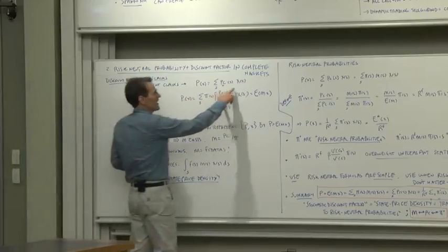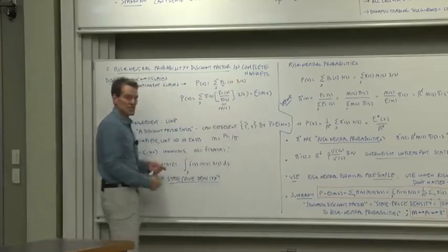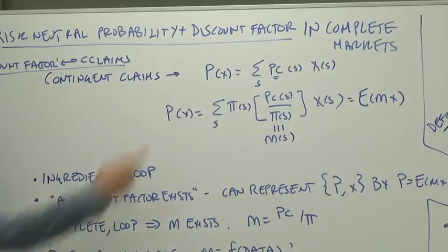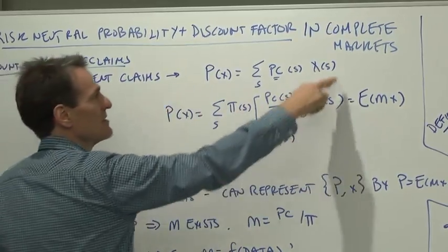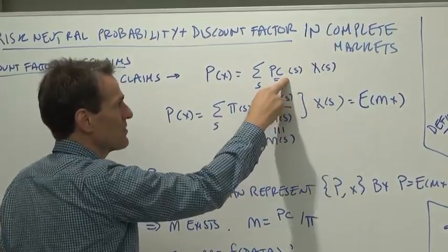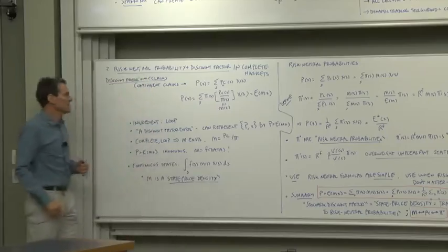The price of any payoff, a payoff here is just a bunch of contingent claims. It specifies how much you get in each state of nature. So the price of any payoff is the sum of the contingent claims prices, what each payoff is worth, times the payoff in each state of nature.